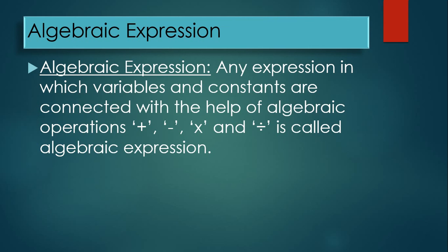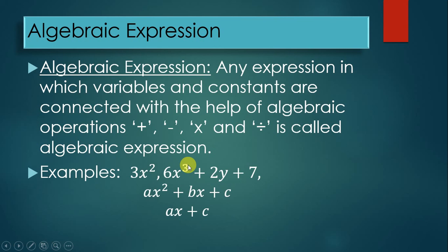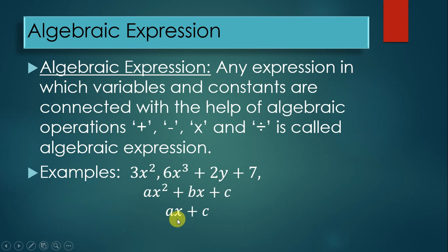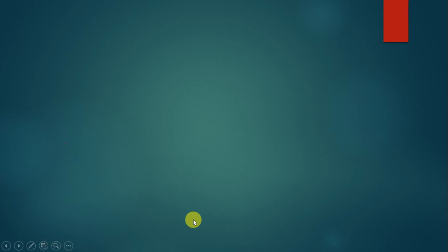For example, 3x² is an algebraic expression — x is multiplied by itself twice, then multiplied by 3. Similarly, 6x³ + 2y + 7 is an algebraic expression. Also, ax² + bx + c and ax + c are algebraic expressions. In the next lecture, we will go further into algebraic expressions, in sha Allah.